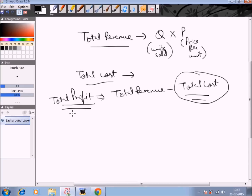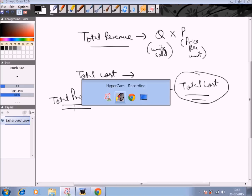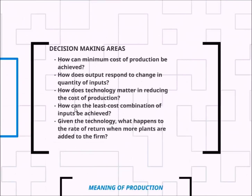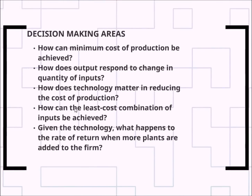Let's see some fundamental questions that managers are faced with — these are decision-making areas. How can minimum cost of production be achieved? As stated, we can maximize profit just by minimizing the cost of production, so how do we achieve that minimum cost of production?